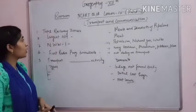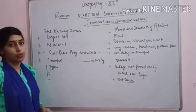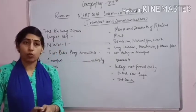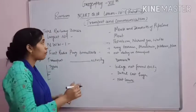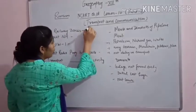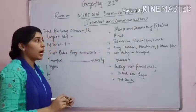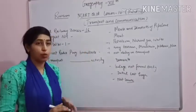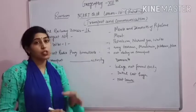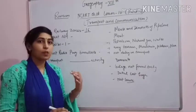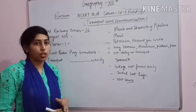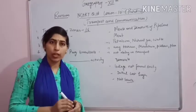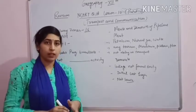The first MCQ is: total railway zones. Railway management has divided the railways into zones so that management will be easy. There are 16 zones. The most eastern zone is Kolkata, the western zone is Mumbai, and the northern zone is Delhi. You can learn these zones.